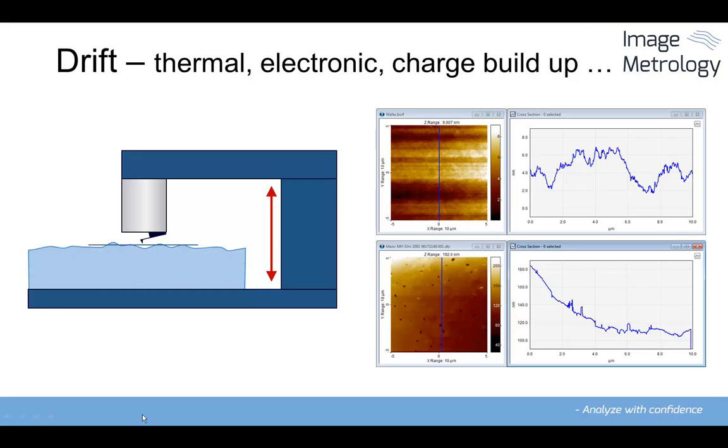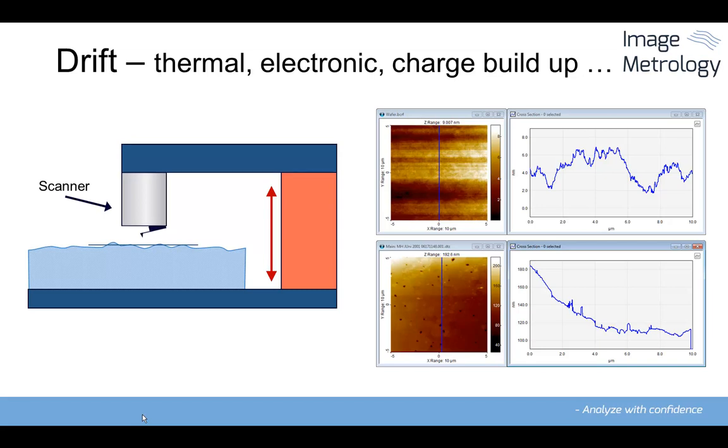Drift will cause images to vary in height along the slow scanning axis of an AFM scan. In SPMs without height sensors, piezo creep will have a similar effect. Thermal drift is caused by a thermal expansion and contraction in the mechanical loop of the microscope, which is compensated for by the Z scanner.